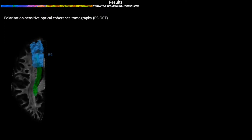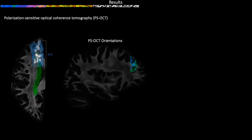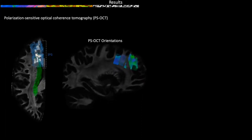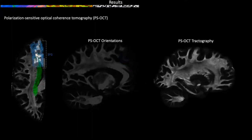From each block in the superior frontal gyrus, we then obtained orientation information from smaller blocks using polarization-sensitive optical coherence tomography. We then use this information to compute PSOCT-based tractography.